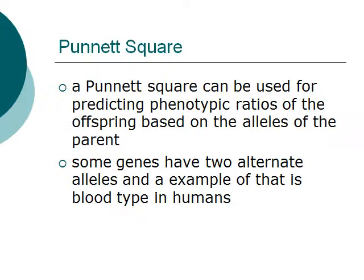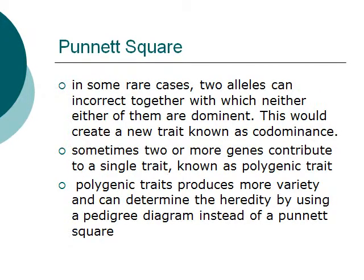Some genes have two alternate alleles — an example of that is blood type in humans. In some rare cases, two alleles can interact together where neither of them is dominant; this creates a new trait known as co-dominance.